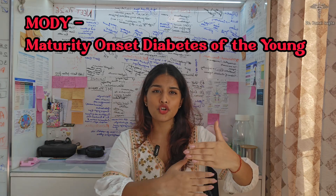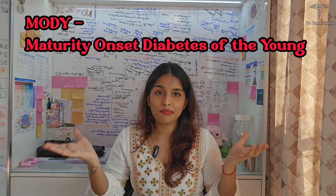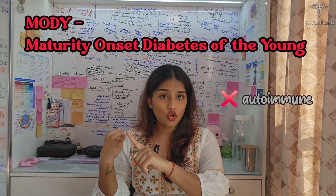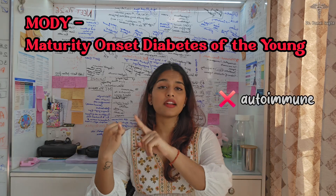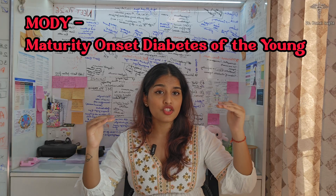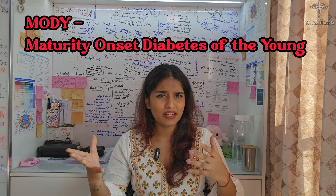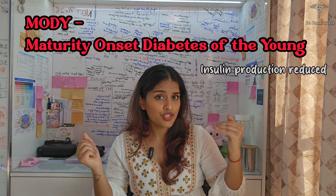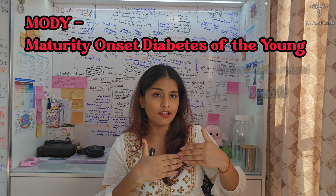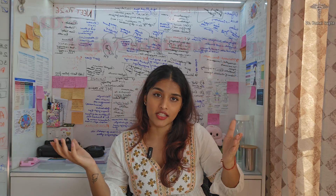MODY stands for Maturity Onset Diabetes of the Young. MODY is often misdiagnosed as Type 1 or Type 2 diabetes, but it is neither autoimmune nor lifestyle-related. In MODY, insulin production is not completely absent as in Type 1 — it is just reduced. Because it is genetic, it manifests early in life, which is why it is called Maturity Onset Diabetes of the Young.